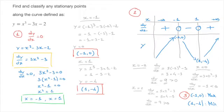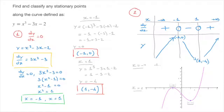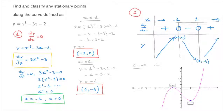We've now found and classified this function's stationary points. Although not required, we can quickly sketch the curve y equals x cubed minus 3x minus 2 to confirm our results. The sketch clearly shows a local maximum at negative 1, 0 and a local minimum at 1, negative 4, with the curve going upwards, reaching the maximum, decreasing to the minimum, and shooting back upwards — confirming everything we found.